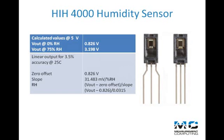The HIH-4000, when excited with 5V, has an output of 31.5mV per percent of relative humidity.